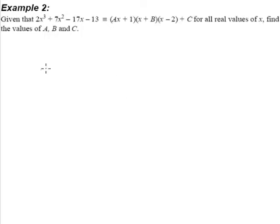Alright, now example 2. Now in example 1, we learned that there are basically two different methods to solve identity questions like this, to solve for A, B, and C.